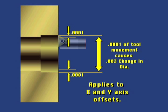For example, if the offset is two thousandths, the tool actually moves just one thousandth in X. Since the bar is rotating, however, a full two thousandths is removed from the diameter of the part.